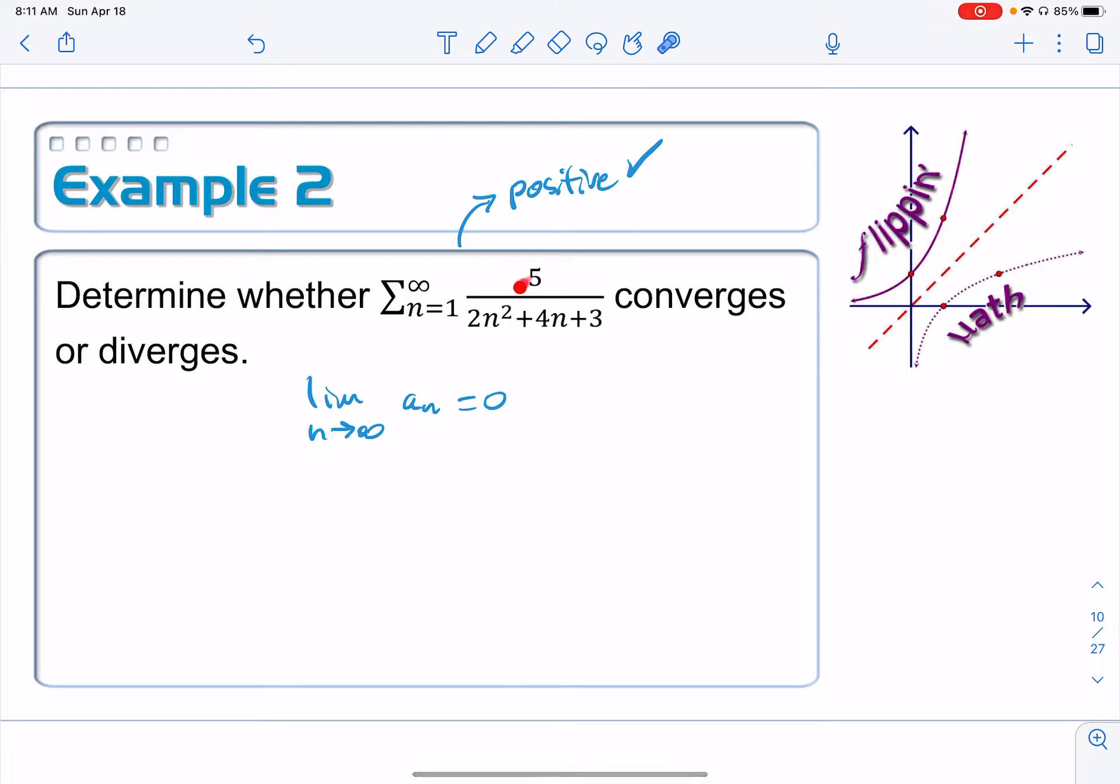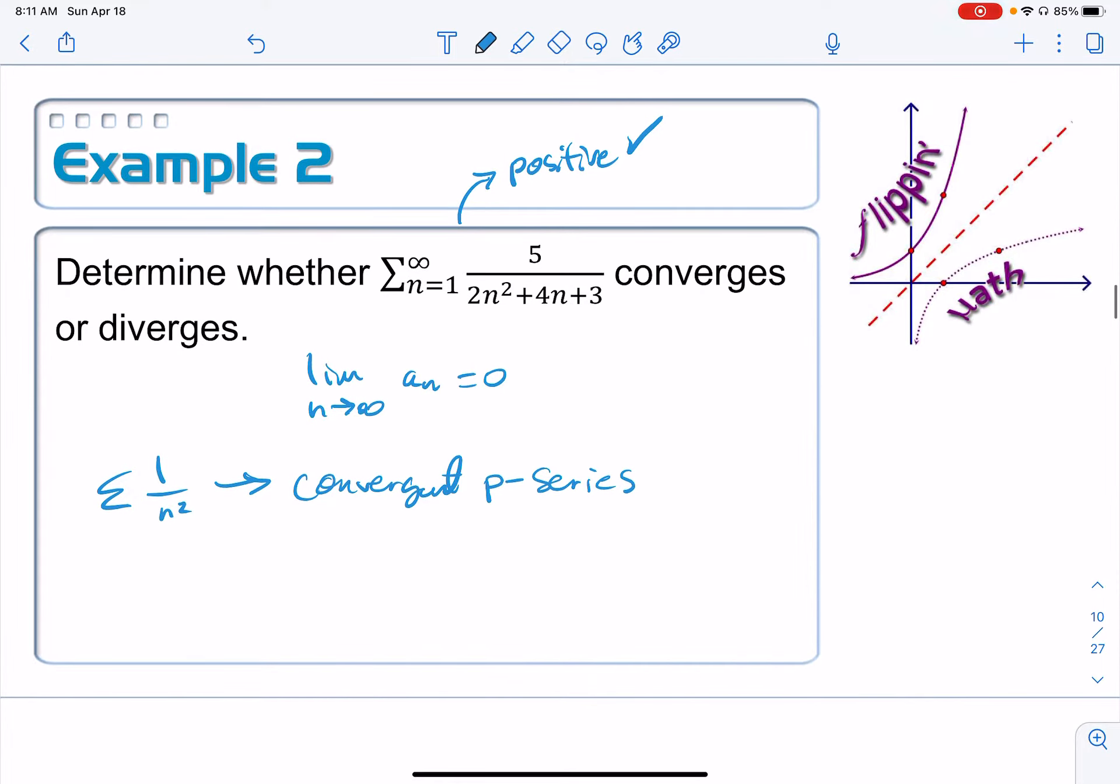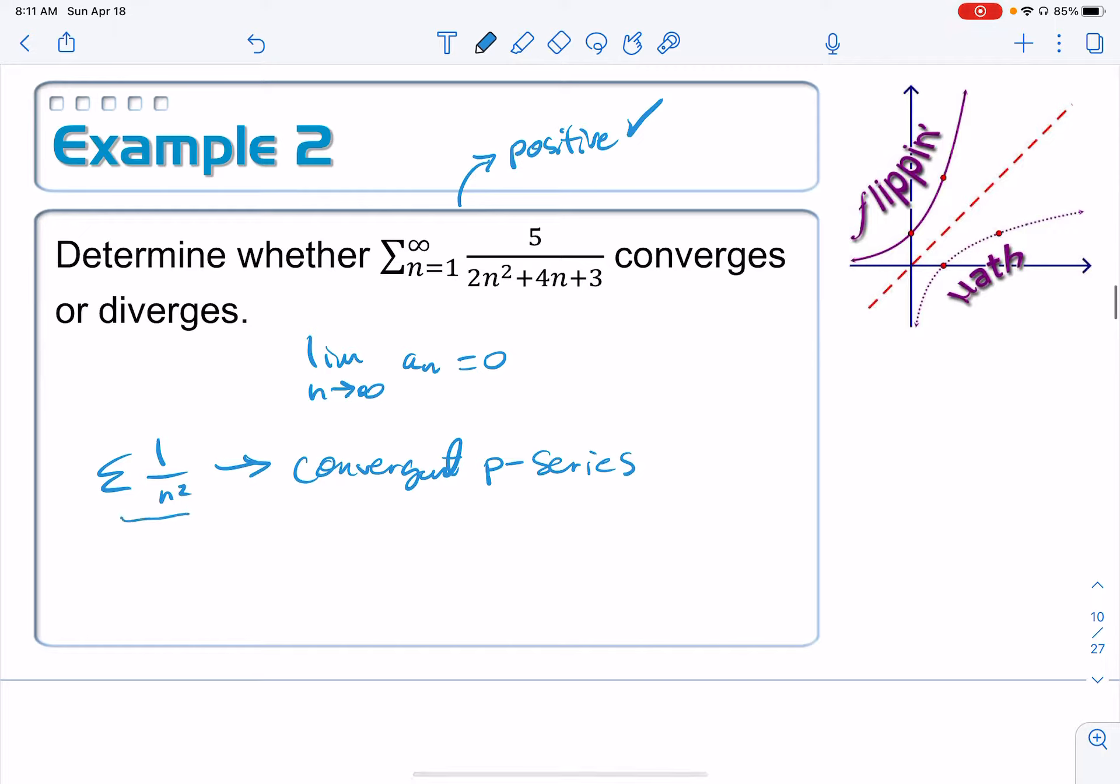Also, when I look at the dominant terms here, it looks sort of like 1 over n squared, which if I put the little series thing in there, we know that this is a convergent p-series. So let's see if we can compare it directly to this series, which we know converges. Since it converges, we need to make sure that this one is smaller.